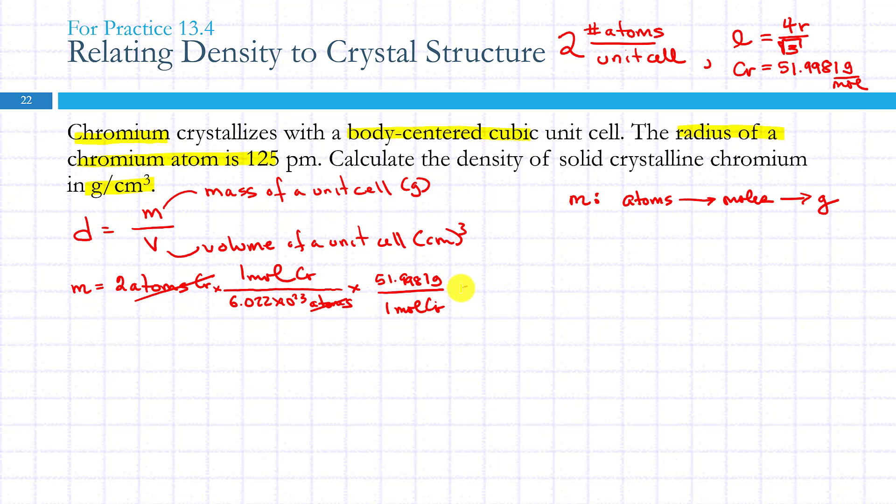If I do this calculation, that comes out to 1.7627269 times 10 to the minus 22 grams. A really small number, but remember we're dealing with just two atoms.